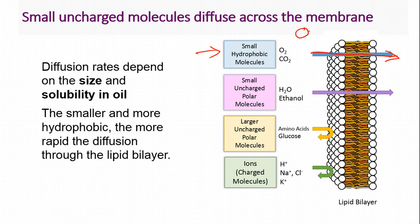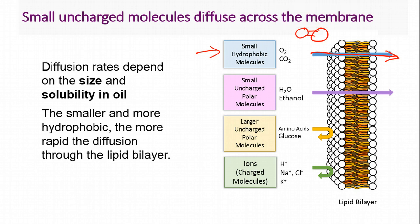Oxygen is hydrophobic because there is no polarity — even though you have two electronegative atoms, they're pulling on each other with the exact same force, so there's no region of charge. The same with carbon dioxide — it's a linear molecule such that there is no region of charge on either side, even though those are polar bonds. These will diffuse easily through a membrane. Another type of molecule that can diffuse through the membrane are small, uncharged, polar molecules.